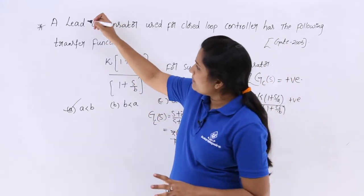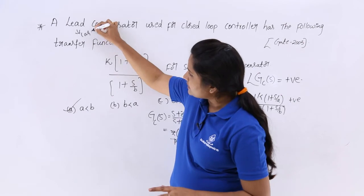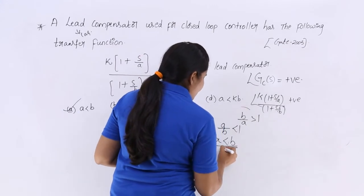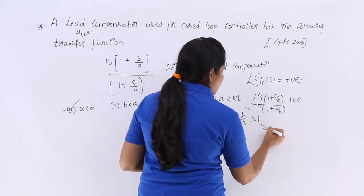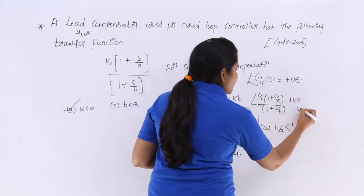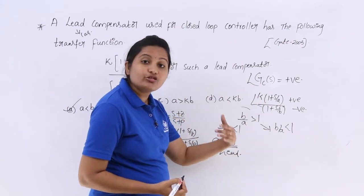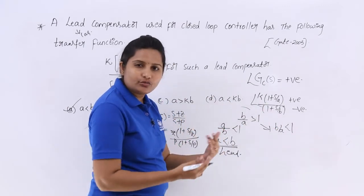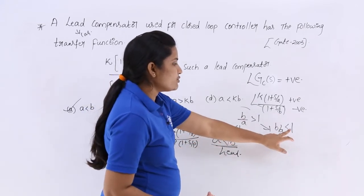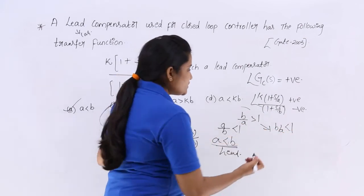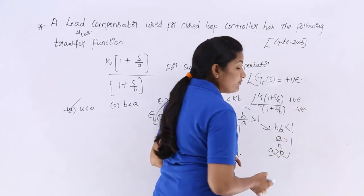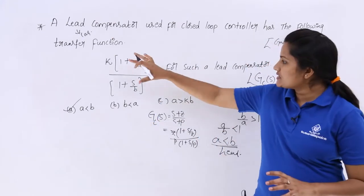Similarly, if they had given this as a lag compensator, then B by A must be less than 1 and the phase value must be negative — since lag means negative phase and lead means positive phase. So B by A less than 1 means A by B greater than 1, which gives A greater than B as the condition for a lag compensator with the same transfer function.